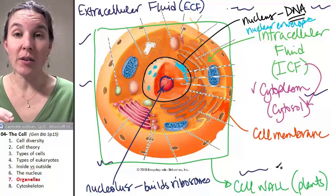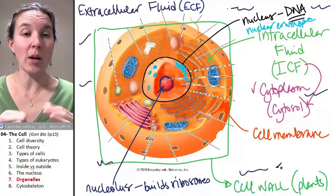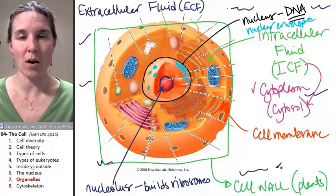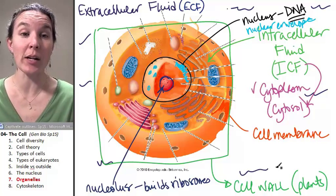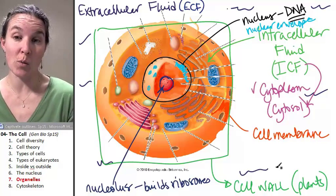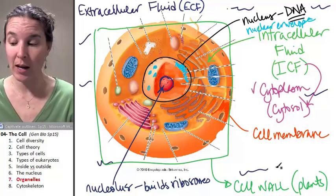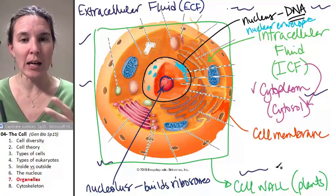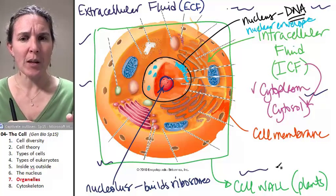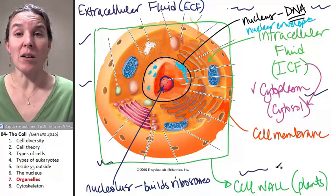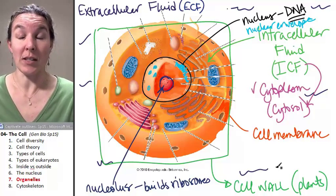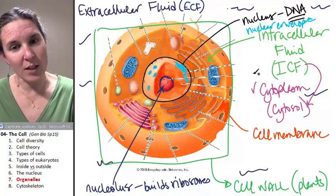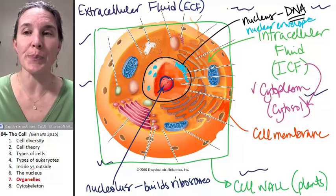There are three other organelles that I want to talk about now — there are more. The other organelles we're going to save until we talk about the cell membrane, because they're basically made of lots of folded cell membrane, so it works better to talk about them in the next lecture.